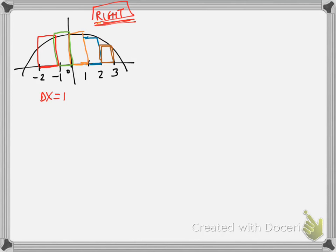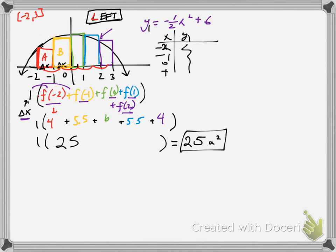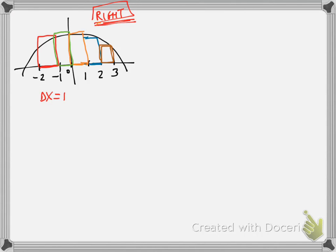So contrast this picture with the last one. They sort of have different bars, even though they're covering the same space. So it's going to give you a different approximation. But the method is still exactly the same. Your bases are all the same. So you can factor that out. So delta x equals one. So there's your base times all the heights. In the first interval, what calculated the height? Not the left value, negative two, but the right value, which is negative one.